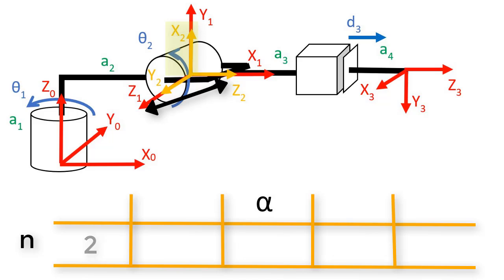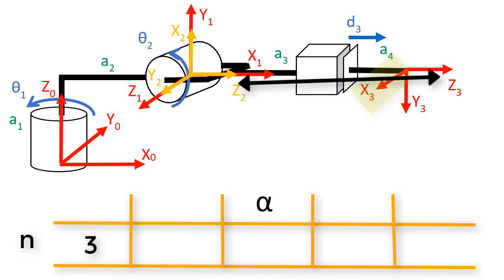For the third row, I substitute n equals 3. Alpha is the amount that we have to rotate frame 2 around axis x 3 in order to get z 2 to match z 3. Z 2 is pointing to the right and z 3 is also pointing to the right, so we don't have to rotate frame 2 at all in order to get these two axes to match. So I'll put 0 in here for alpha in the third row.